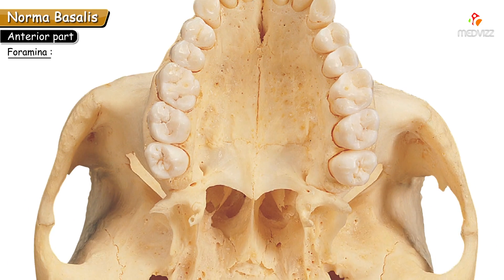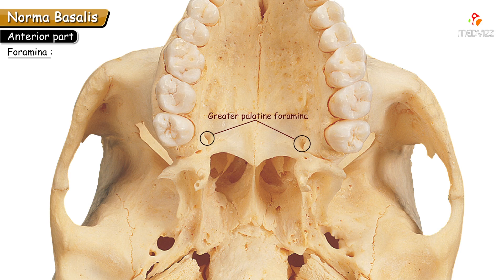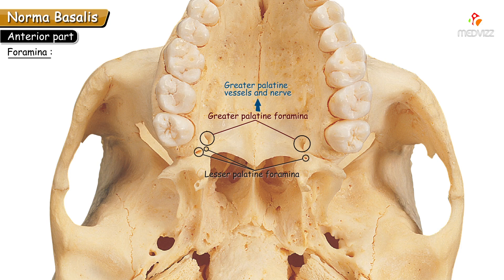Now we shall talk about the greater palatine foramen and the lesser palatine foramen. These foramina are found on the posterolateral aspect of the hard palate. The greater palatine foramina are present on each side, are slightly prominent and larger than the lesser palatine foramina, and transmit the greater palatine vessels and nerve. This foramen is present near the palatomaxillary suture.